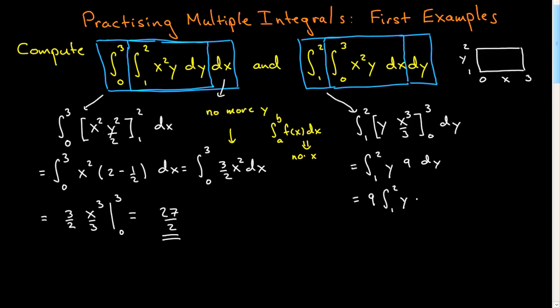9 times y squared over 2 from 1 to 2. And that's the same thing we just did. That's going to give me 27 over 2. Okay, so we got the same answer. There you go.